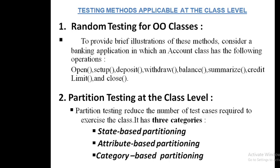In random testing, a second sequence could be: open the account, set up the account, withdraw some amount, and close the account. Another sequence may be: open the account, set up the account, view the balance, and close the account. Yet another: open the account, set up the account, view the credit limit, and close the account. In this manner we can randomly test the account class in an object-oriented environment.